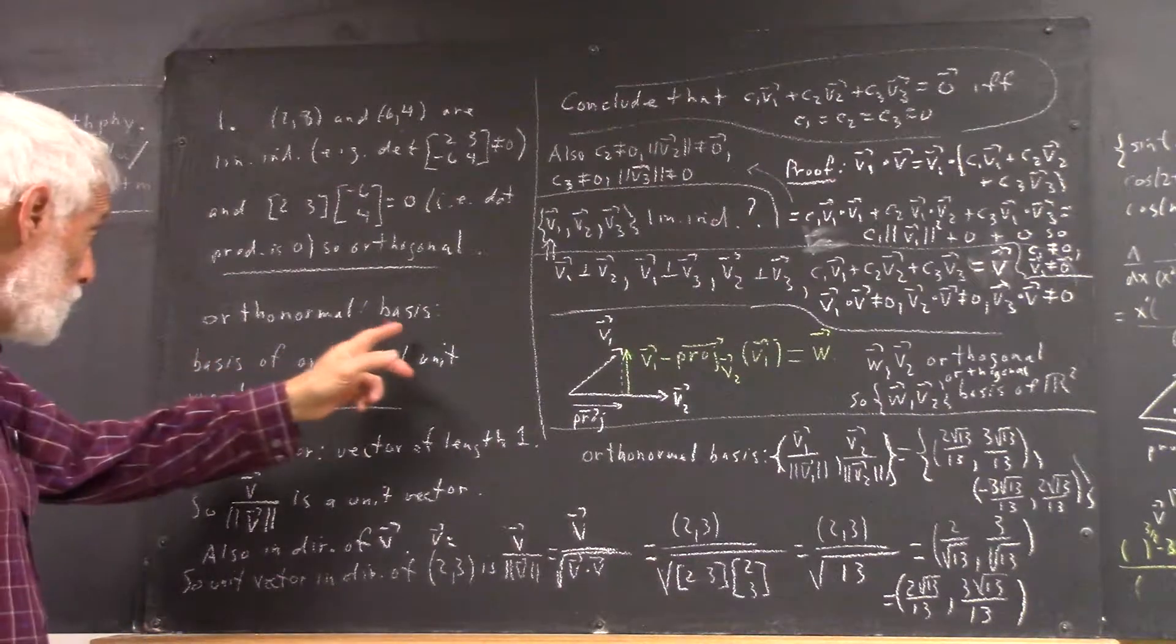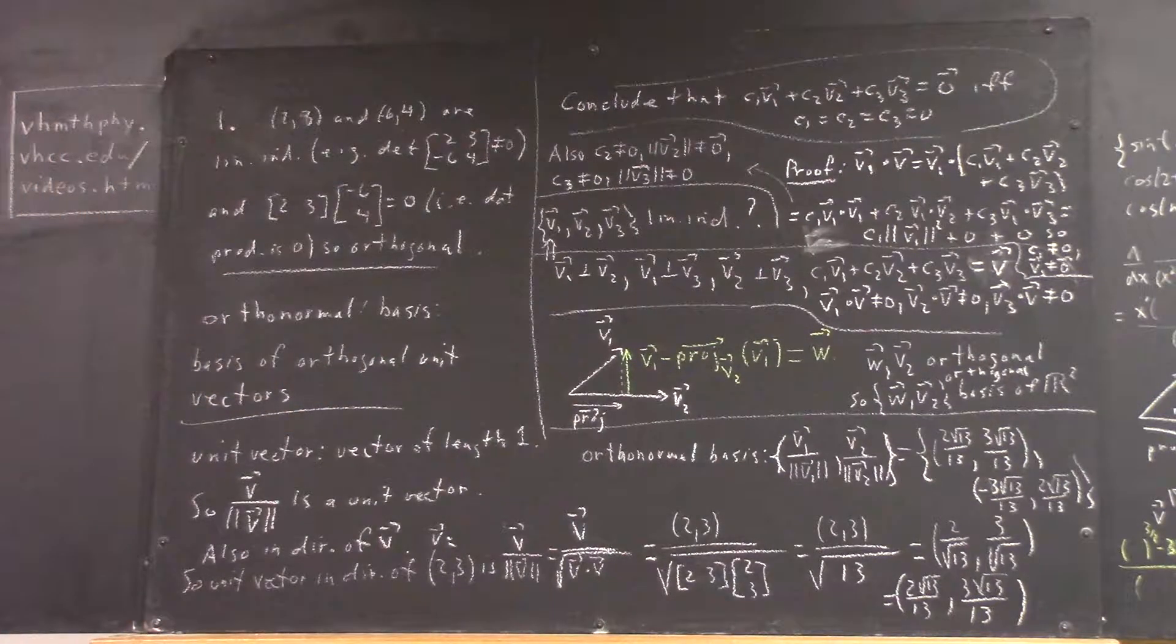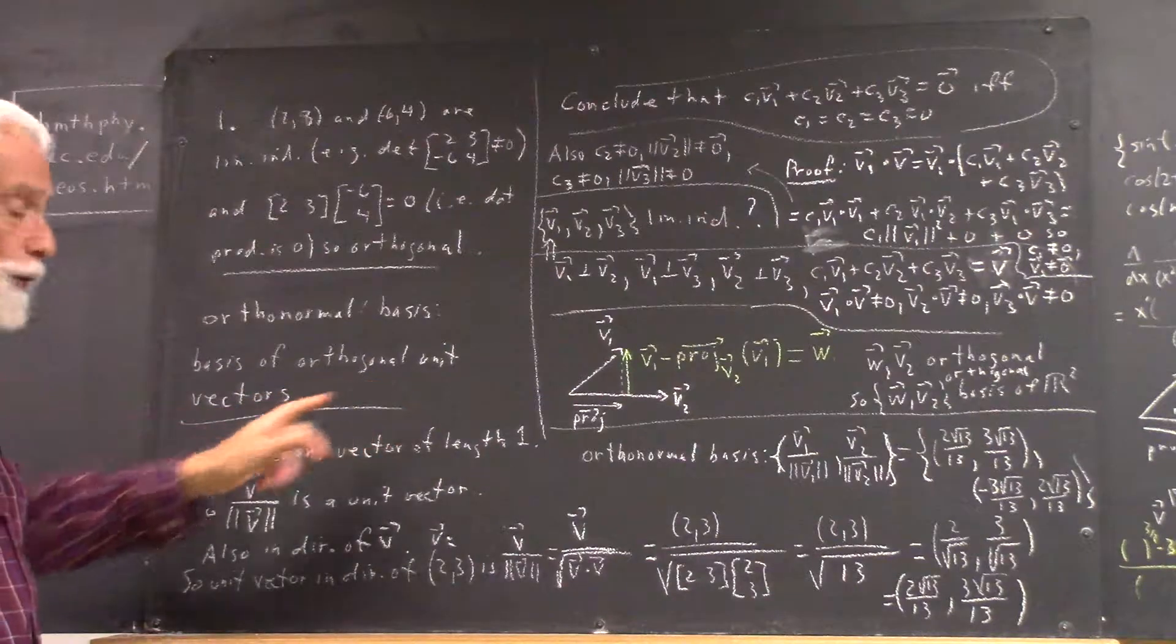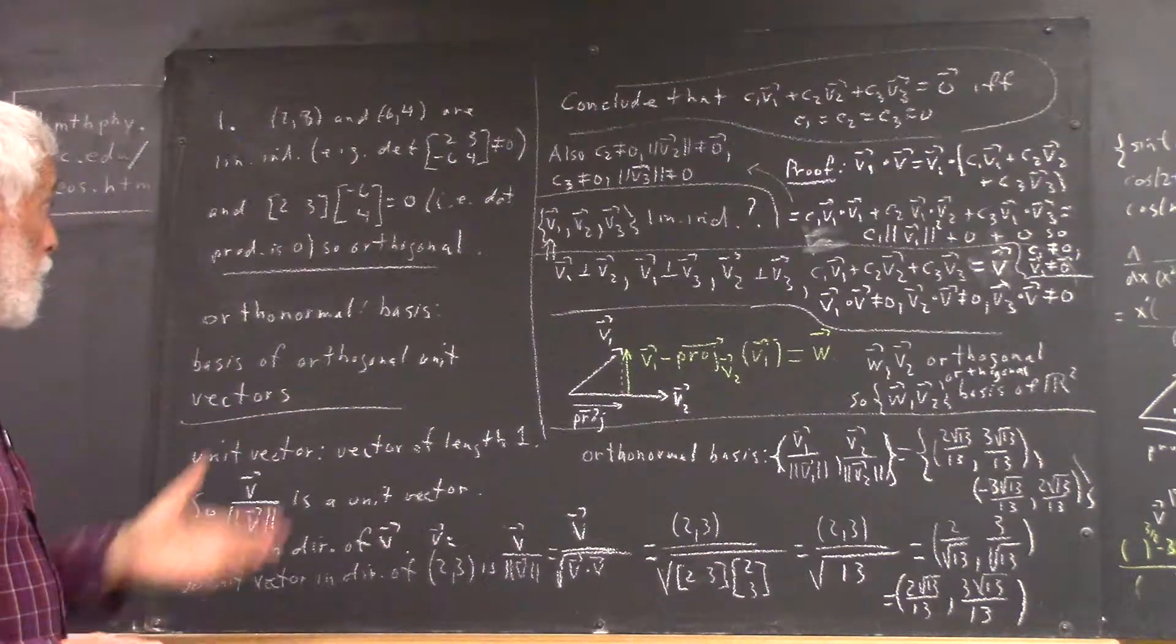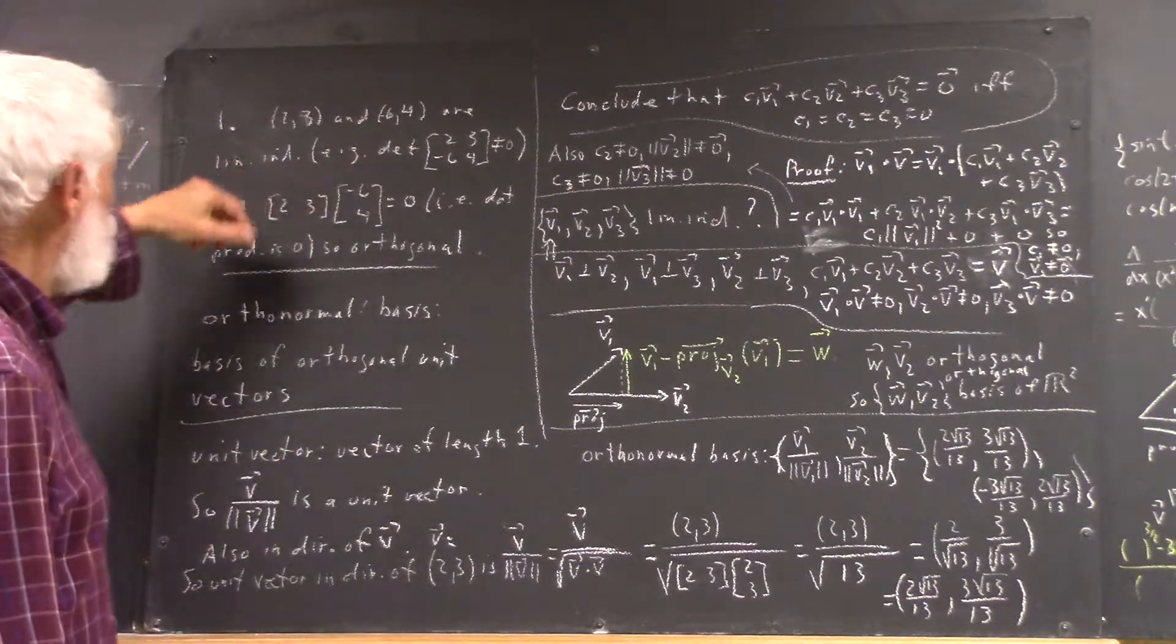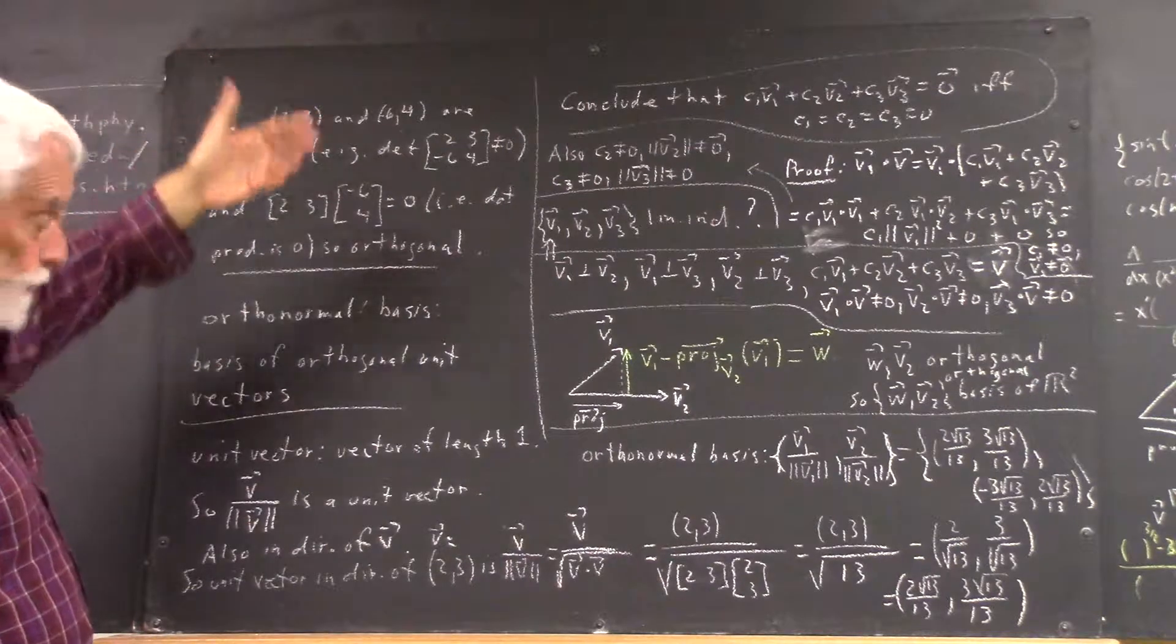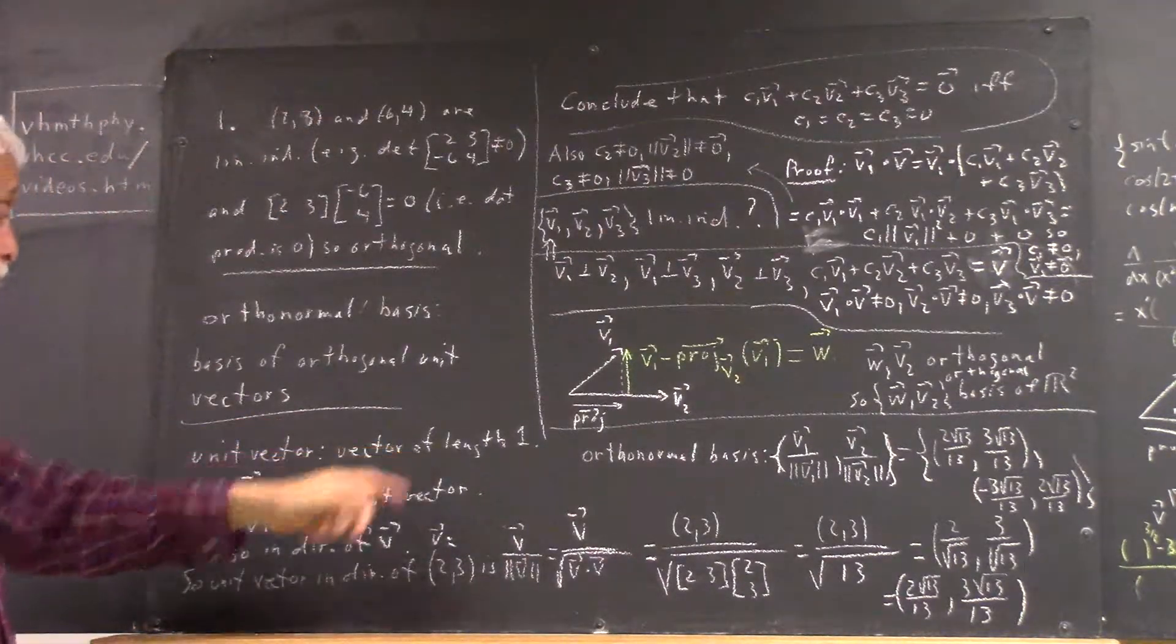An orthonormal basis is a basis of orthogonal unit vectors. Now these aren't unit vectors. Their lengths are not 1. A unit vector is a vector of length 1.